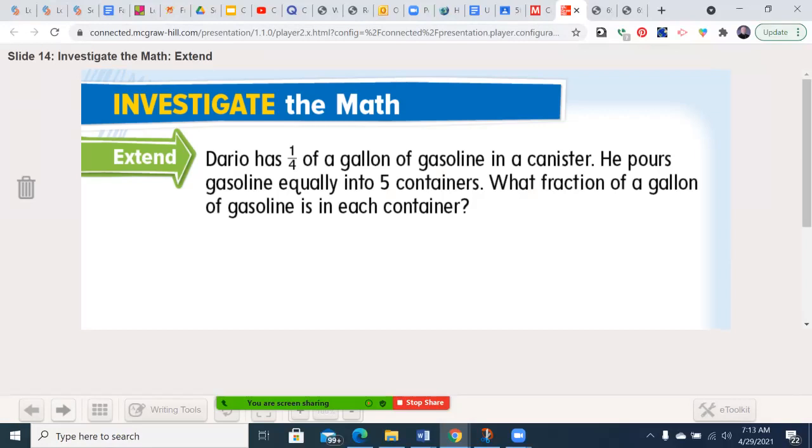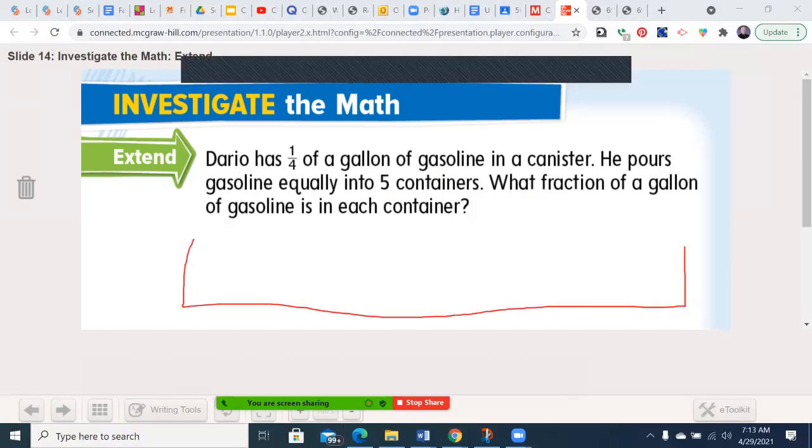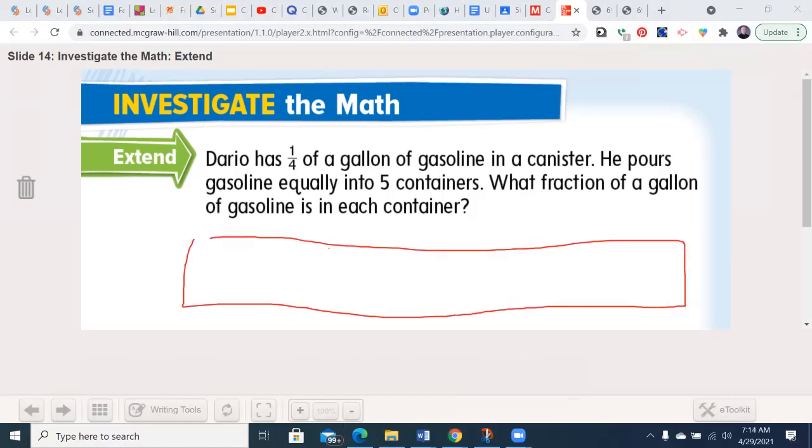Dairy has 1/4 of a gallon of gasoline in the canister. Pours it equally into five containers. What fraction of a gallon of gasoline is in each container? So I could take this whole thing, divide it into quarters, and then I have to divide each section into this.